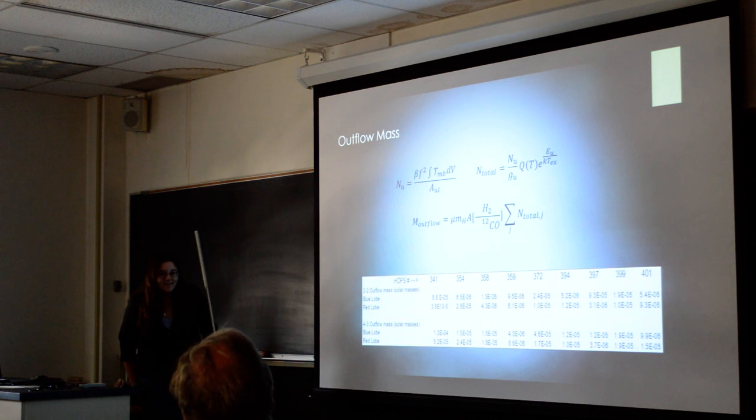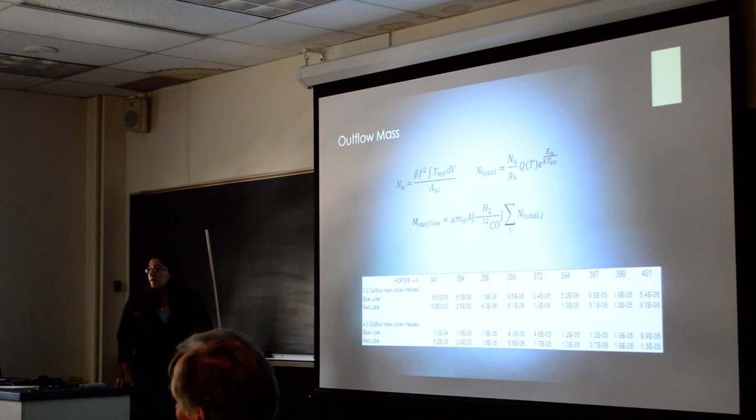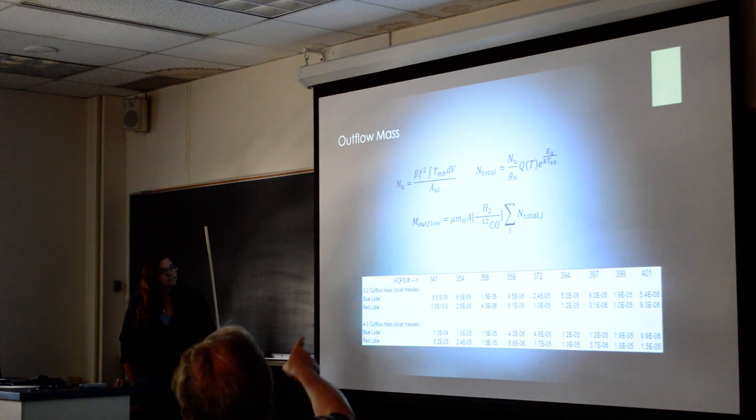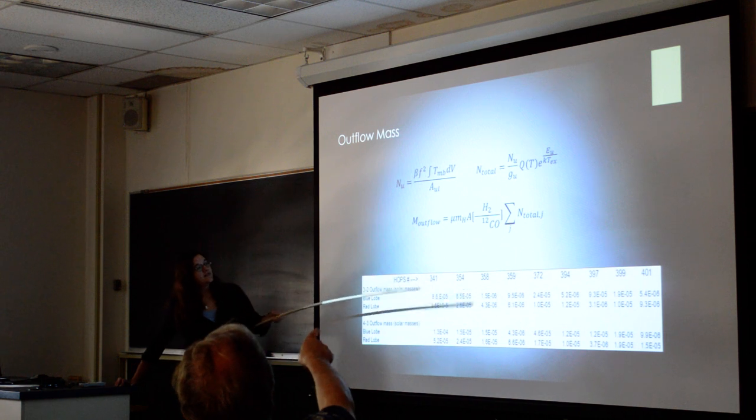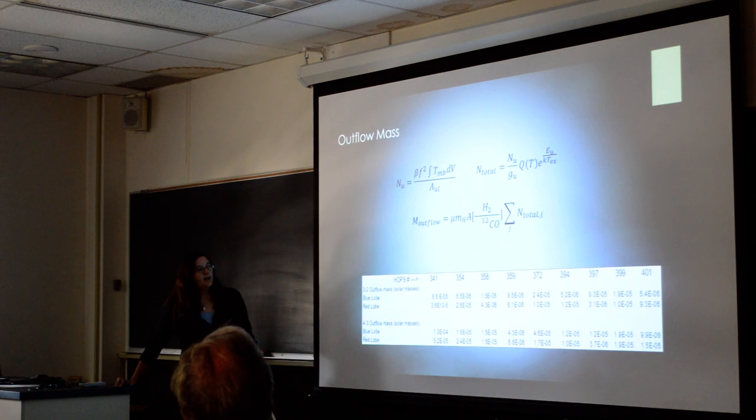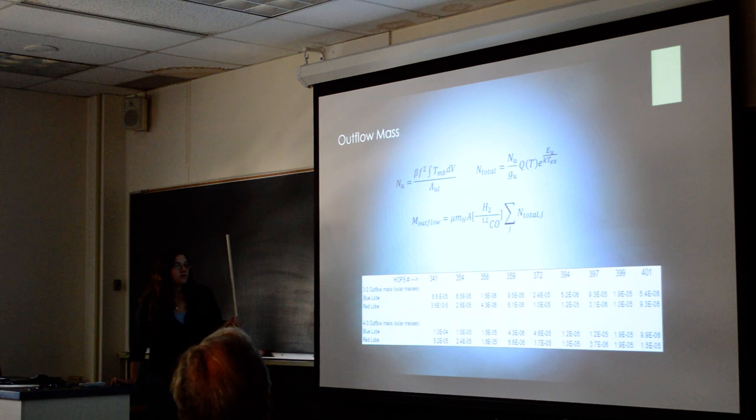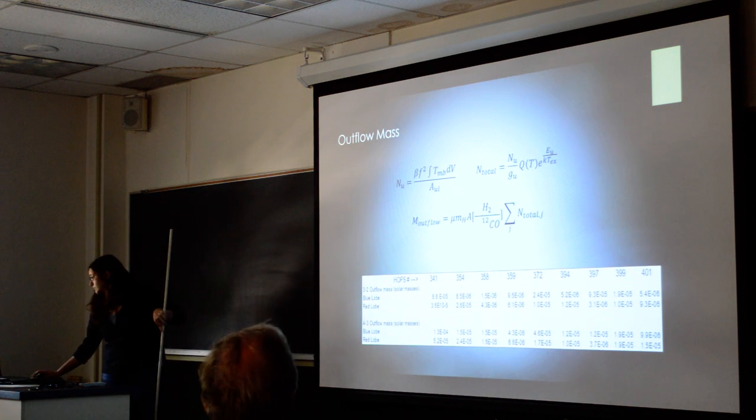Outflow force is the actual outflow rate, right? The A is the Einstein A coefficient, correct? And that is one over seconds. Not that A. What is that up here? The A in outflow force? That A is the area of a singular pixel on the map. All right, let's thank Amanda again. Thank you.